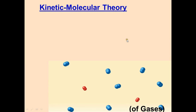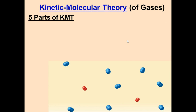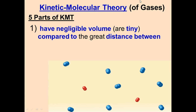Now we're going to be looking at the kinetic molecular theory of gases. These are the five parts of the theory that describe how gas particles move. The first part is that gas particles have a negligible volume — meaning they have such a tiny volume that it's practically nothing compared to the distance between them. The distance between particles is almost 10 times the size of a particle.